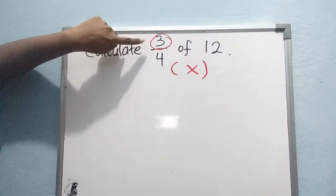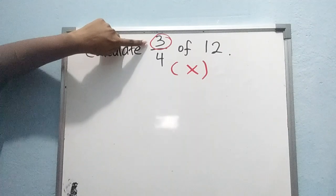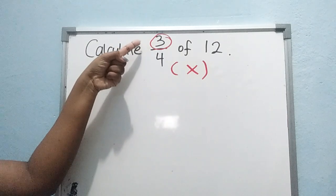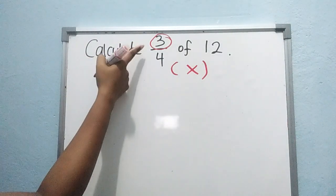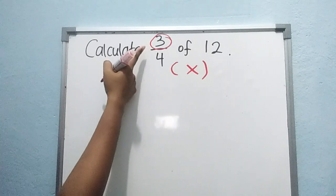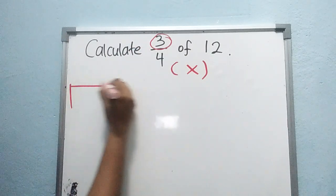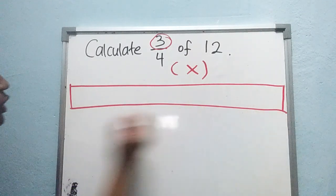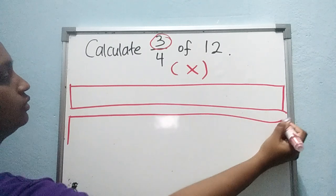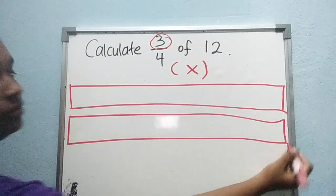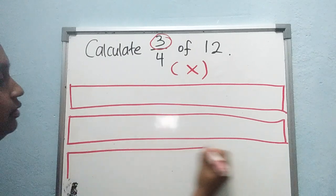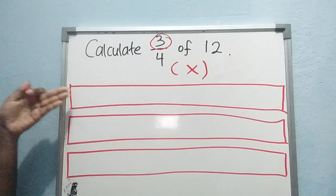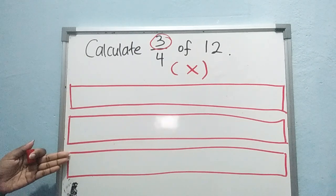Now, what is the number at the top here? You have 3. So the first thing you must look at is the top number. You have 3, correct? So you must draw 3 long boxes. Look here — 1, 2, 3. You have 1, 2, 3 long boxes.